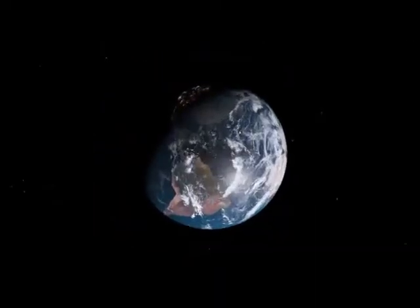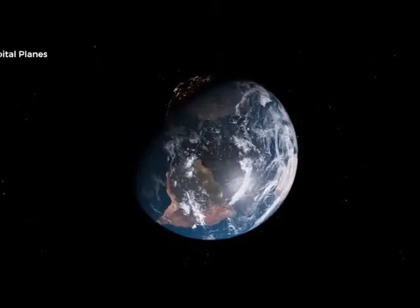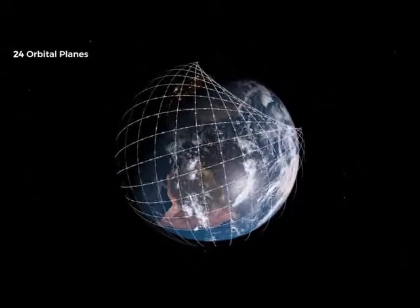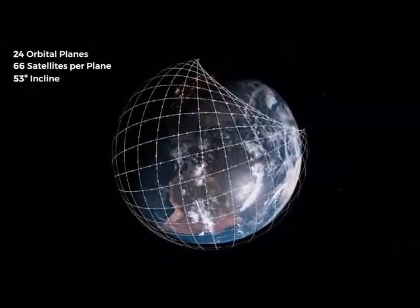SpaceX's first phase of 1584 satellites will occupy 24 orbital planes, with 66 satellites in each plane inclined at 53 degrees. This will look something like this.